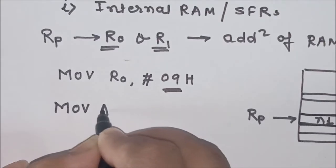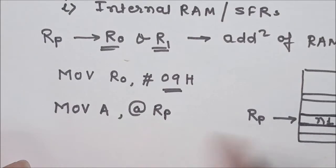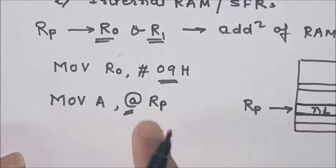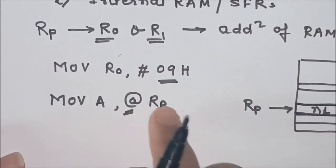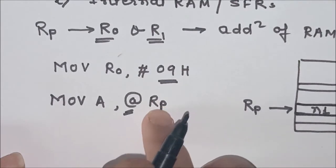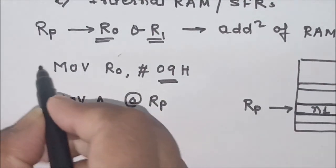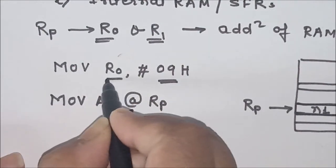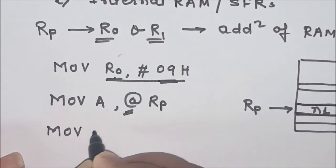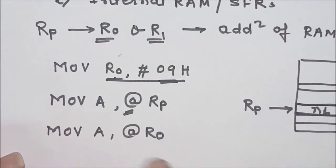The format of indirect addressing mode is: MOV A, @RP — where RP means R0 or R1. The @ sign indicates a pointer, meaning the address of the memory location is stored in RP, and the data from that memory location should be stored in the accumulator as the destination. In this case, we have stored the address in R0, and now we can write the instruction: MOV A, @R0.